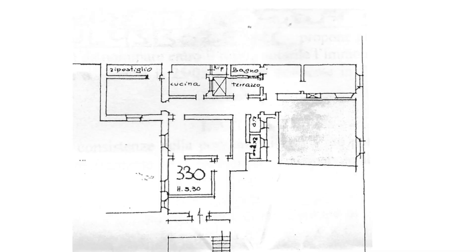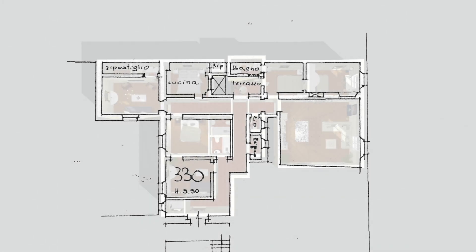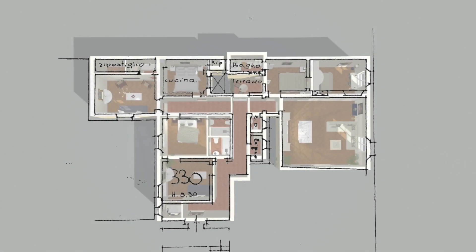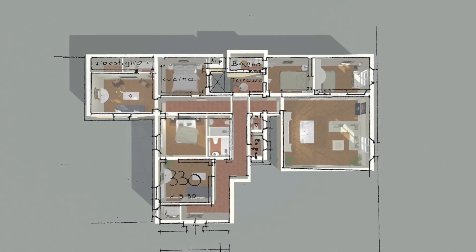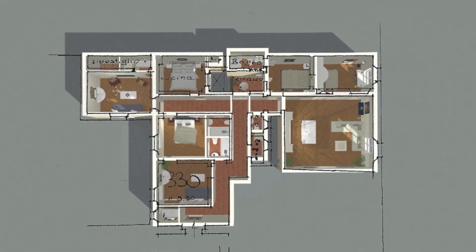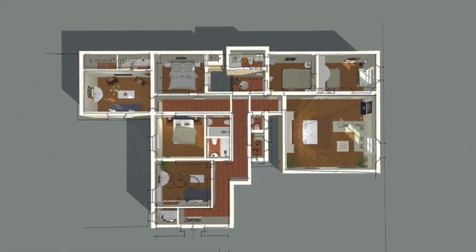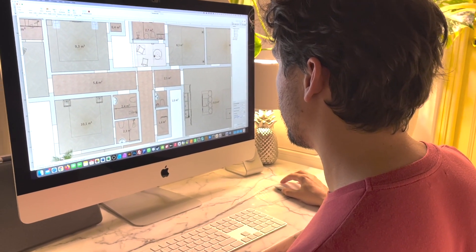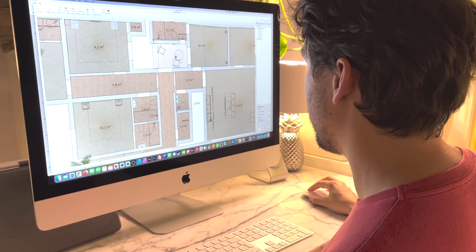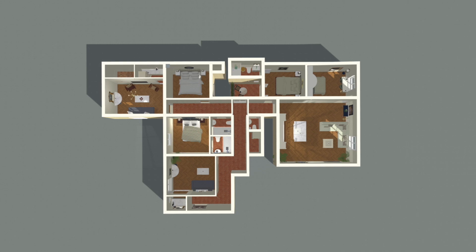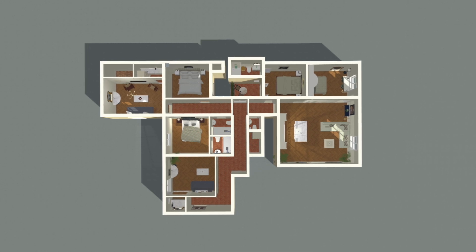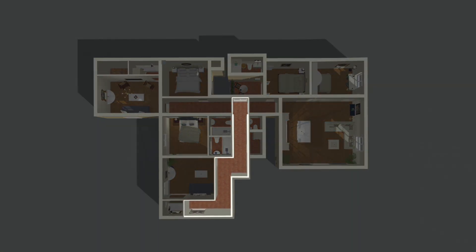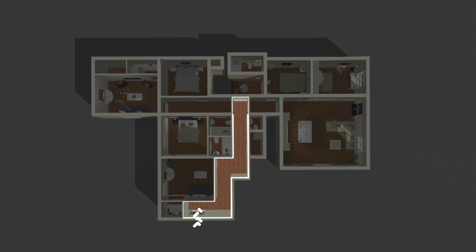We begin by transitioning from the inherited floor plan to our 3D model — and by the way, this was all made quite easily with a free program and I'll be sharing how I did it in an upcoming video. With two months of planning, we decided to split this apartment into three, all fed from the shared corridor.